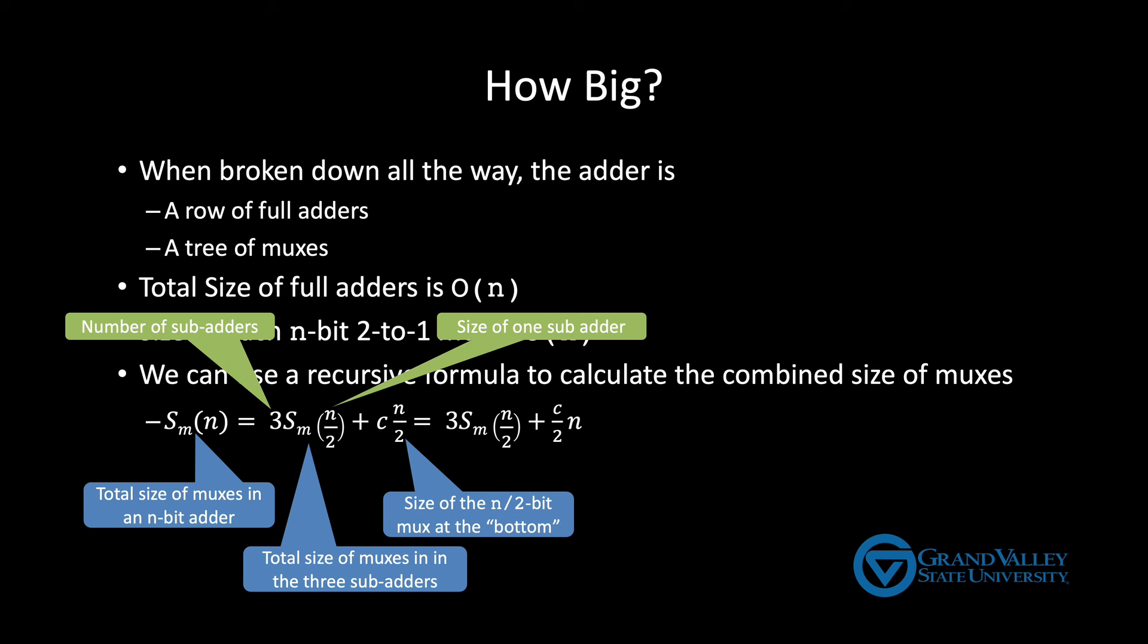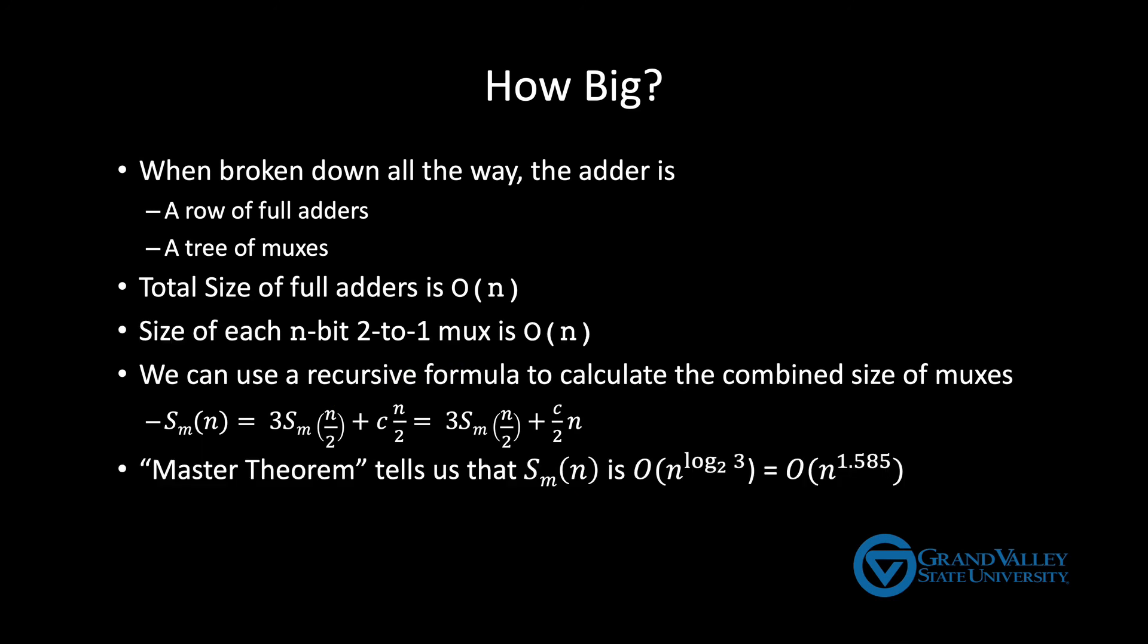So then we can take this term and this is what we get when we simplify it a little bit. Now in order for this to mean something we want to rewrite it in a closed form, which is just a nerdy way of saying write it without recursion. The math to do that is interesting but a little too long for this video. So I will just say that there's a theorem called the master theorem that tells us that this function is big O of N to the log base 2 of 3 or in other words N to the 1.585 power.